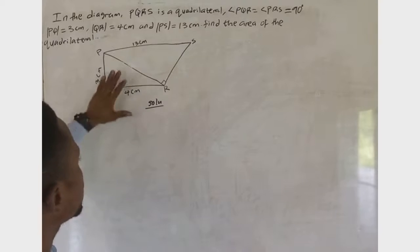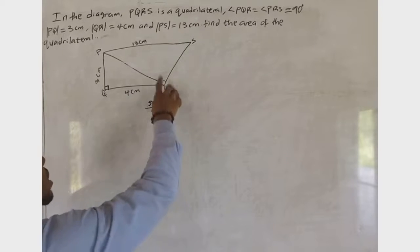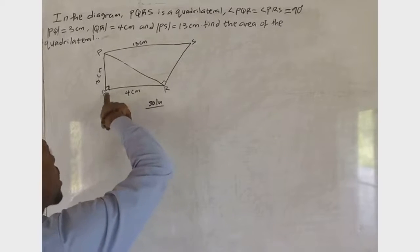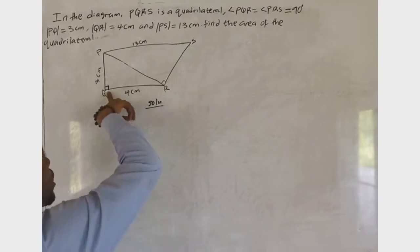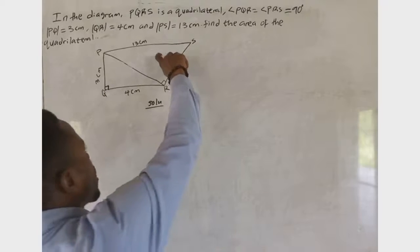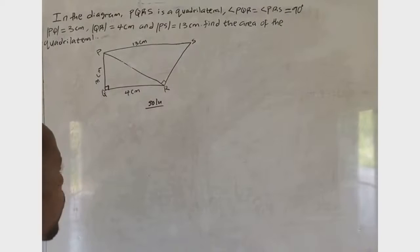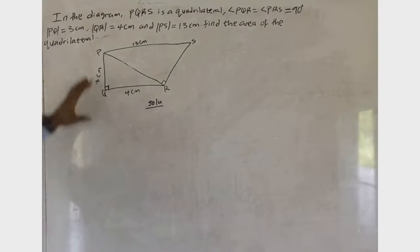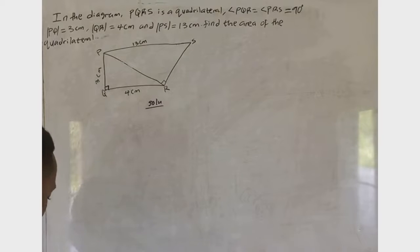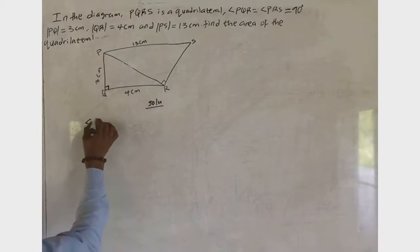If we look at this shape, it has two clear right triangles. The first right triangle is triangle PQR, and the second is also a right triangle.